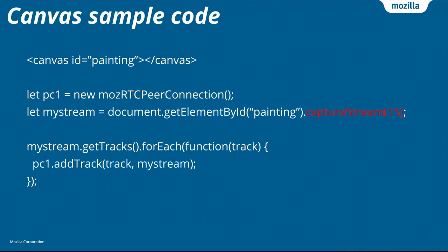Sample code. We no longer need a video element to attach it, because the canvas is going to be rendered anyway locally in your browser. The new thing — highlighted here in red — is the captureStream function call. You can tell it how many frames per second you want; that's the 15. And out you will get a video stream. Then you attach that video stream to your peer connection as we've done before with the regular getUserMedia call.